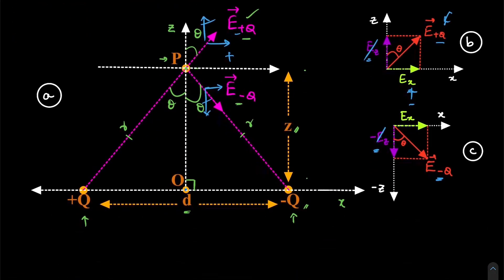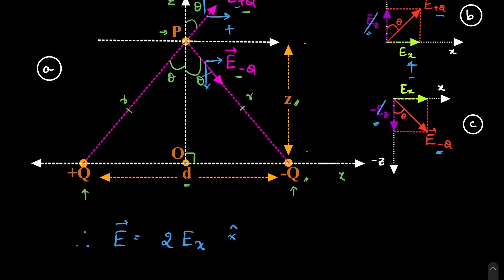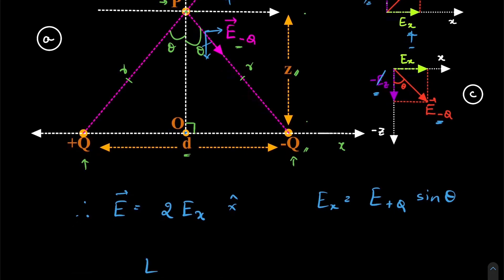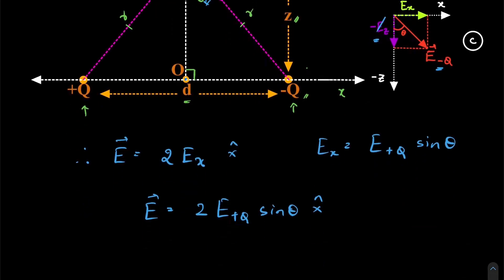Now what is Ex going to be? Therefore, the electric field is going to be two times Ex, in the x-cap direction. So what is Ex? Since this is the angle theta, Ex is going to be E plus q times sin theta. Therefore, the final electric field is going to be two times E plus q sin theta, x-cap. So once we know this, all we have to do is find E plus q and sin theta.